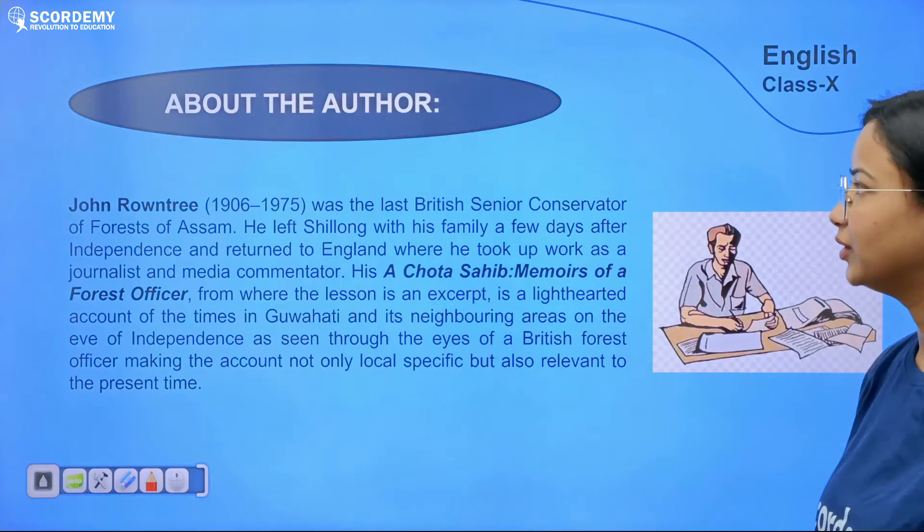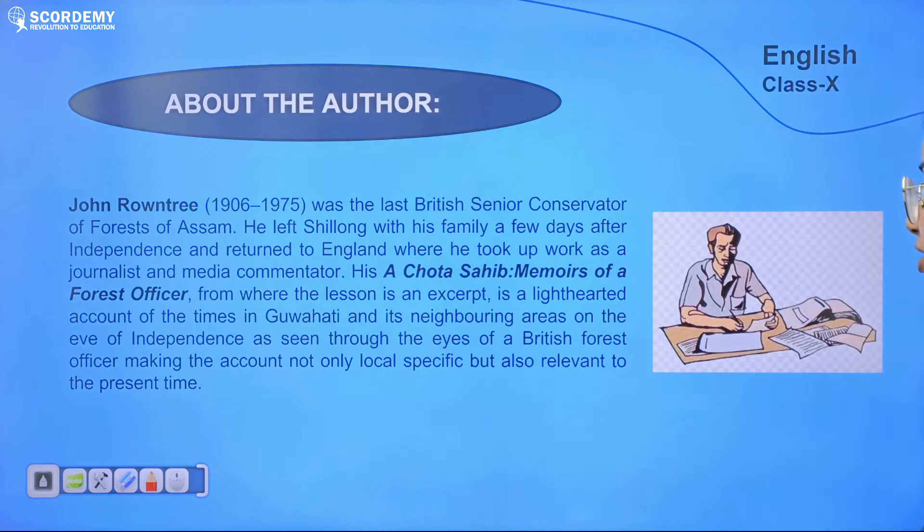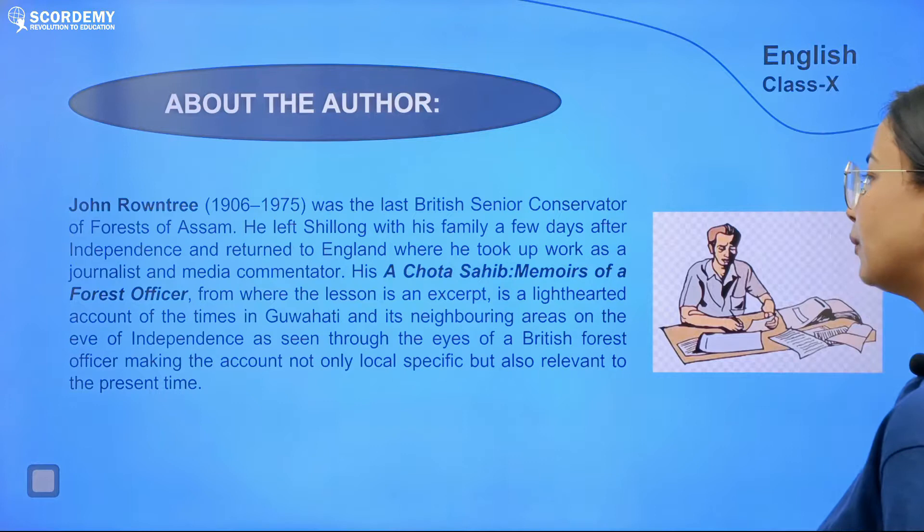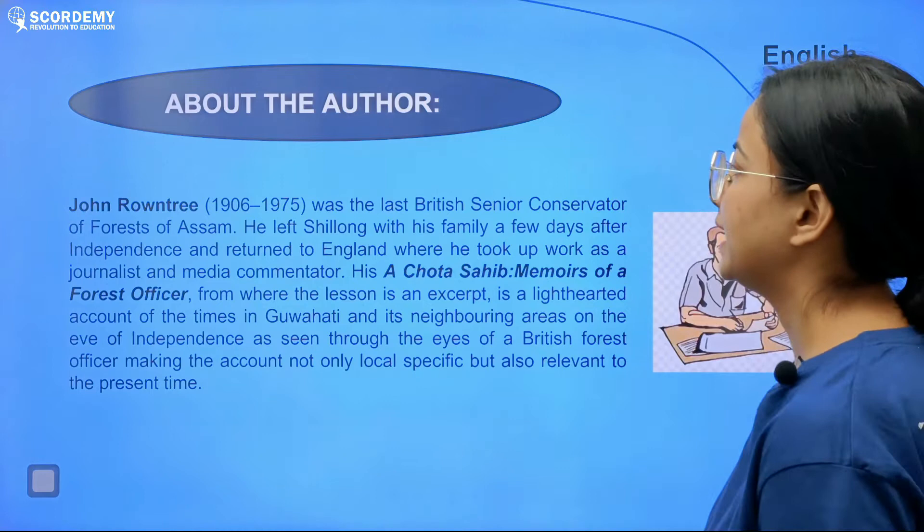Let us read about the author a little bit first. John Roundtree was the last British senior conservator of forests of Assam. He left Shillong with his family a few days after independence and returned to England, where he took up work as a journalist and media commentator. John Roundtree was born in 1906 and passed away in 1975.